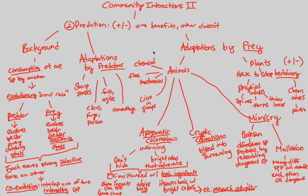Overall, what we see in the predation relationship is plus-minus: one benefits and the other doesn't. This has created an evolutionary arms race between predator and prey, both co-evolving to develop the adaptations of predators and the adaptations of prey seen in great detail within the animal and plant worlds.